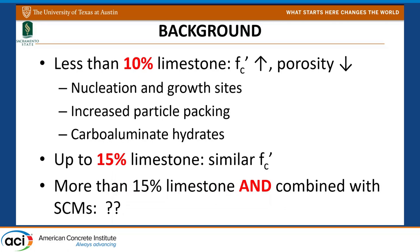Portland limestone cement is not something new — Europeans have been doing it for decades, since the 1960s. ASTM did not allow any limestone until 2005 for C 150, and then in 2012 they started allowing up to 50 percent under C 595. Initially people believed the limestone filler would be inert, but we now know that's not really true. Some of the limestone reacts, and even if it doesn't, it helps hydration by providing nucleation and growth sites, increases particle packing to improve strength, reduces porosity, and forms additional hydrates such as hemicarboaluminate and monocarboaluminate.